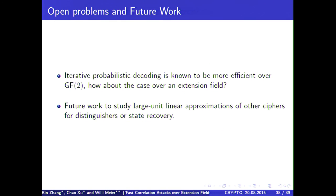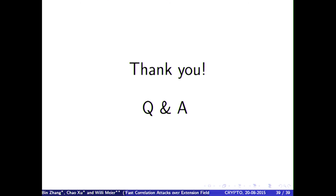There are some open problems. We know that there are iterative probabilistic decoding methods in the bitwise case for fast correlation attacks. And the question is, can we come up with something similar over larger units? And, of course, it would be attractive to see whether other primitives could be cryptanalyzed using similar techniques. Thank you. Thank you very much.